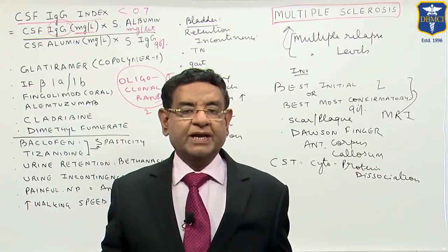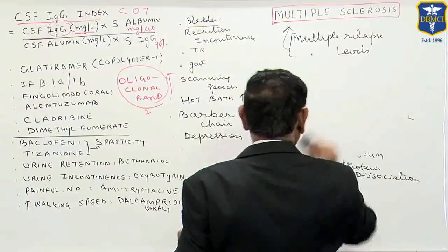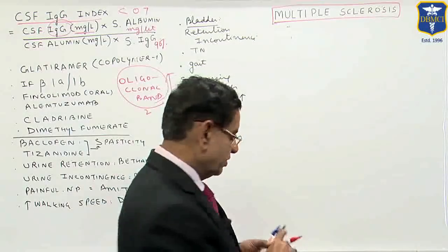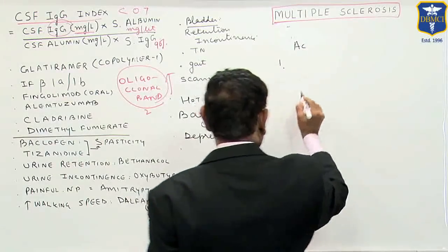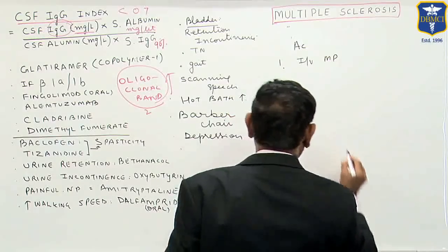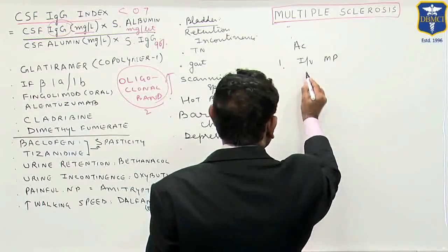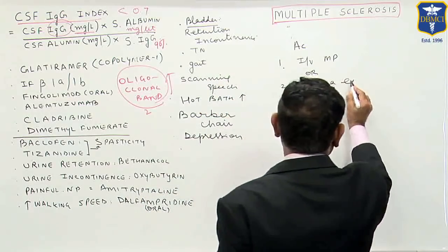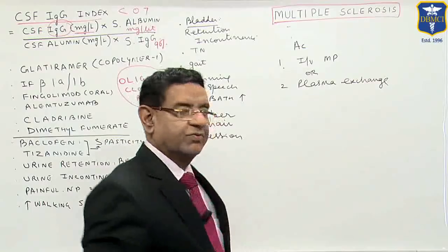When a patient comes with an acute attack, treatment includes acute management and long-term prevention. For an acute attack, the best treatment is intravenous methylprednisolone, or we can go for plasma exchange.